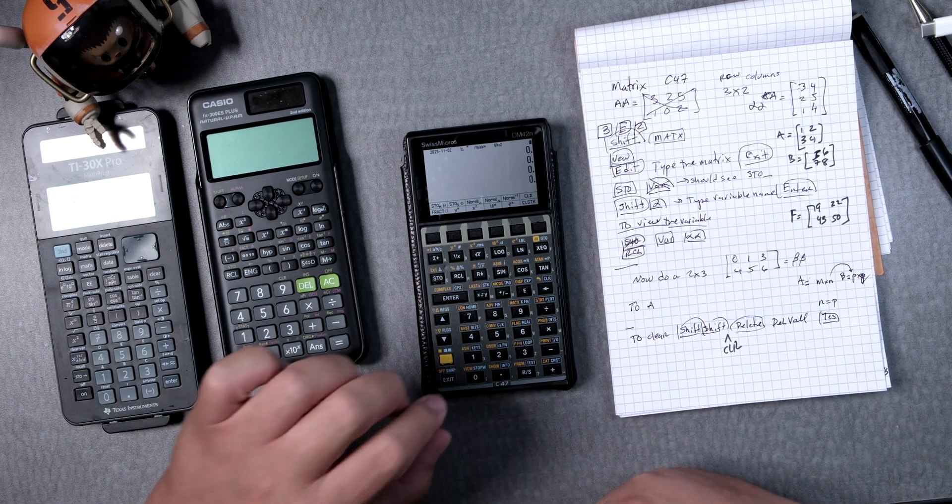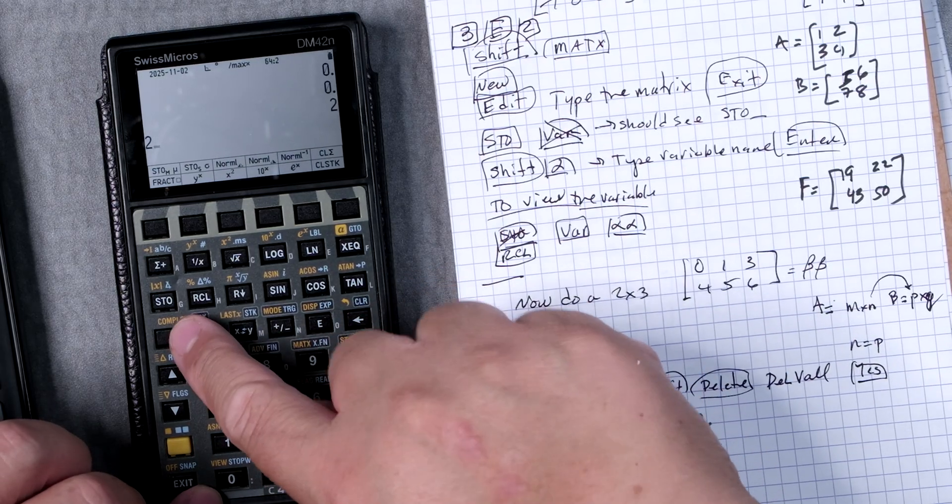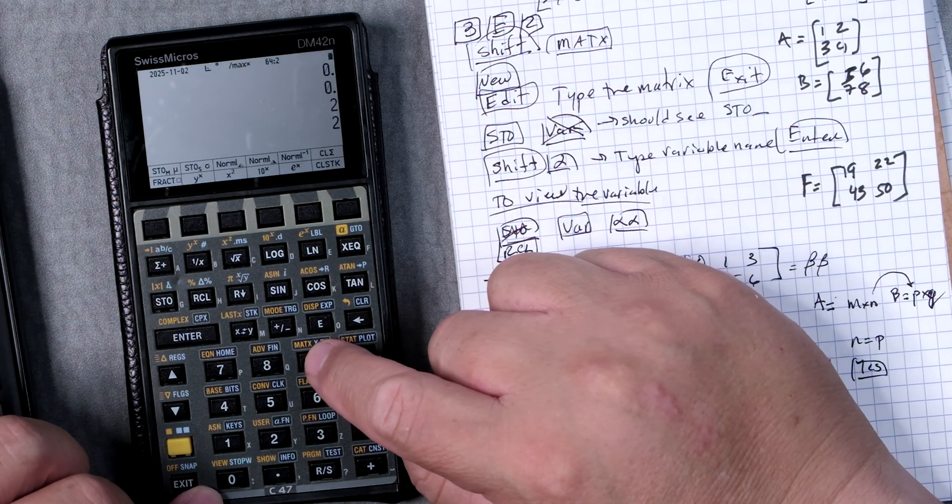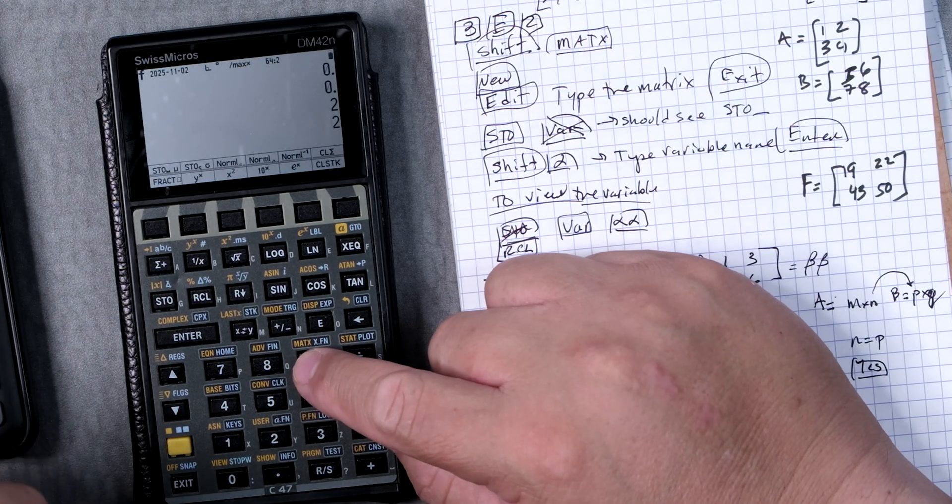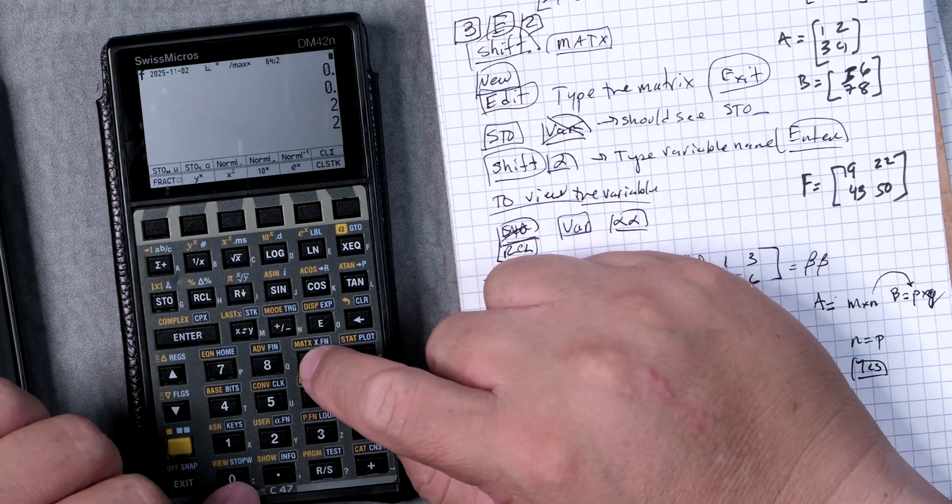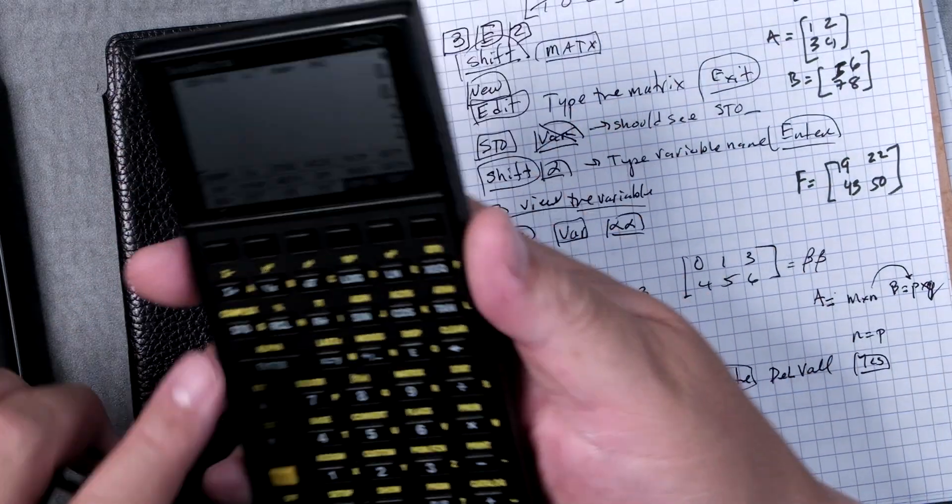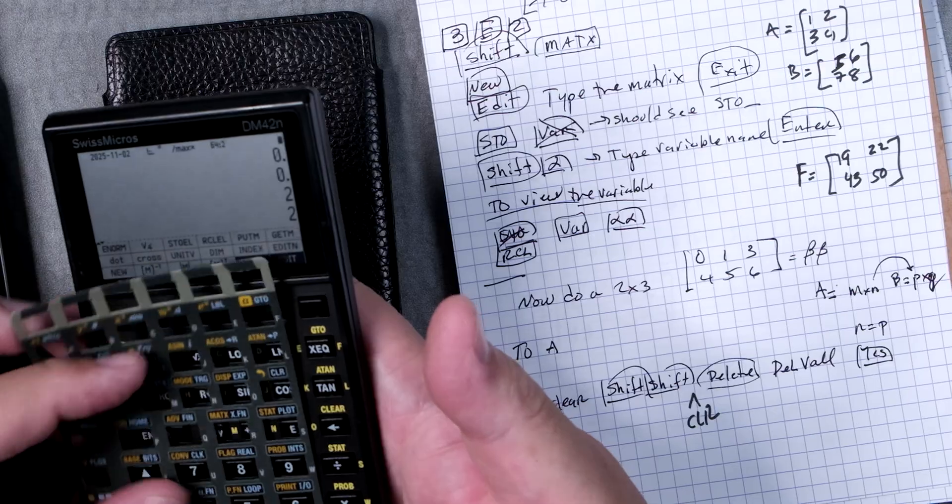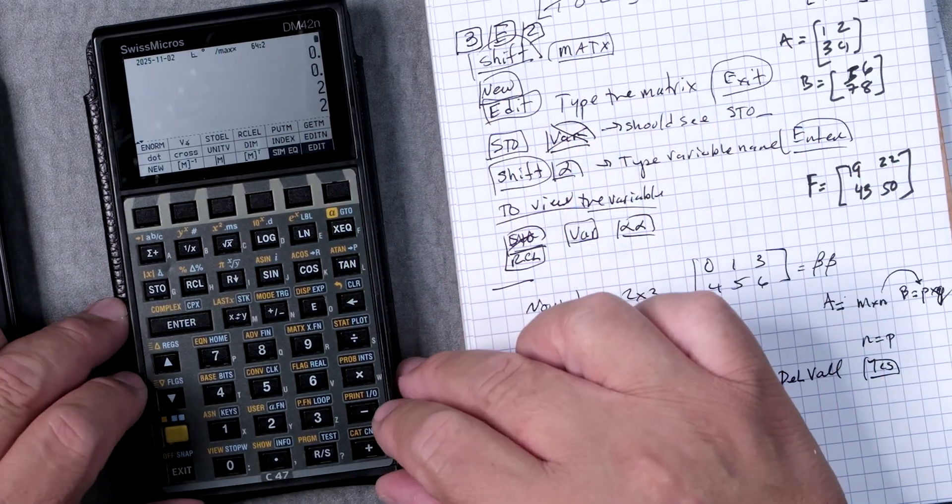The first thing we want to do is tell the calculator we're going to do a two by two matrix. Press enter again, a two by two matrix. Matrix is right here on number nine, so I'm going to go shift one time, shift and then there should be an F right here, then press nine for matrix. I do have this cover. If you don't, it looks like this and you can still follow along. Having this template makes it a little easier for the C47.